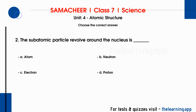Question 2: The subatomic particle that revolves around the nucleus is dash. Options are: A. Atom, B. Neutron, C. Electron, D. Proton. Correct answer is C. Electron.